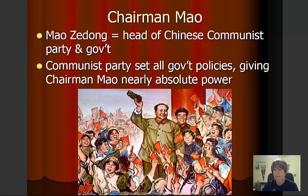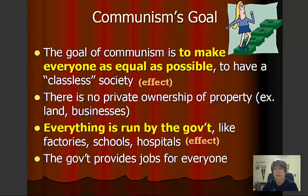Mao set up the government to be more of almost like a cult, where the people virtually worshipped Mao, as you can see in this propaganda poster on the screen. The goal of communism is to make everyone as equal as possible, to have a classless society. There would be no private ownership of property, land, or businesses. Everything would be run by the government — the factories, the schools, the hospitals. The government would provide jobs for everyone. This all sounds nice in theory, except we know that communism does not really work that way.